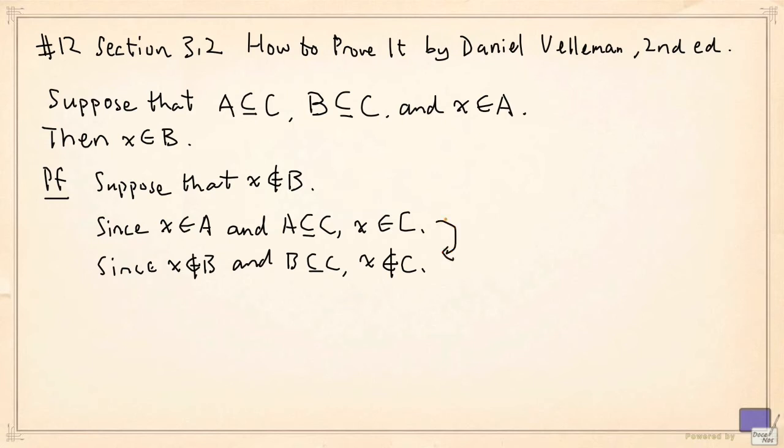And if you look at these, what we have done is we have proved that x is in C and not in C at the same time, which is absurd. So we have reached a contradiction.